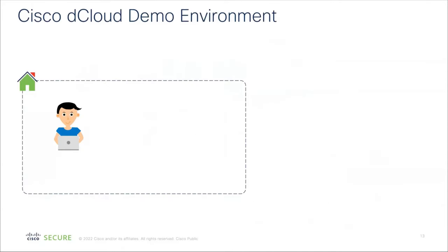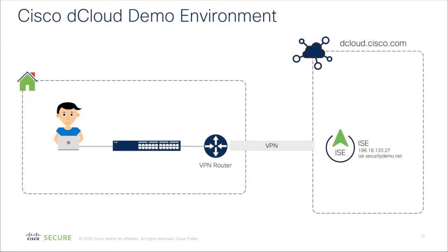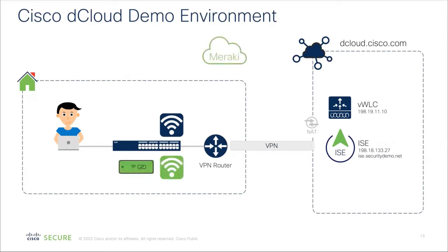Before we start, I want to go over the demo environment I'm using. I have very few slides today — I'm going to spend almost the entire time live in a demo. I'm sitting at home with my home network, and I'm able to access ISE out in our Cisco Demo Cloud, or dCloud. I have access to a virtual wireless controller sitting in dCloud, which can connect to my access point here in my office. I also have the ability to access these through a NAT port, so I can do these demos without a VPN and perform RADIUS-based authentications. We also have Meraki access points from anywhere in the world, controlled by the Meraki cloud, which can send requests into ISE.